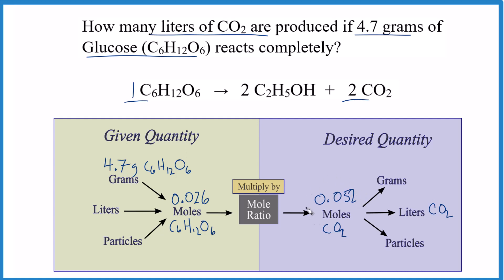At this point, we convert our moles to liters. We multiply our moles by 22.4 liters per mole, and we end up with 1.16 liters of carbon dioxide gas. So you get your grams, you get moles of what you're looking at, the given quantity, use the mole ratio, get moles of the desired quantity, and then convert it to whatever you need. In this case, liters.